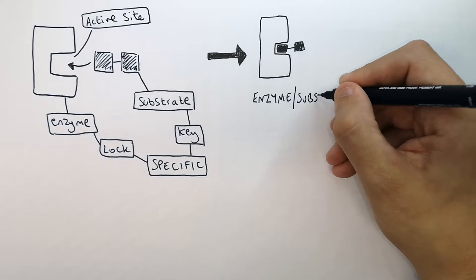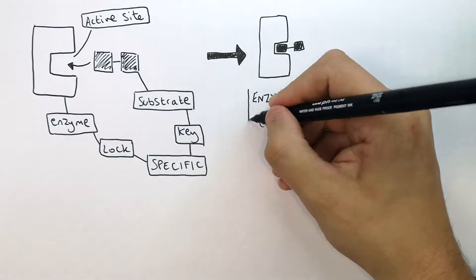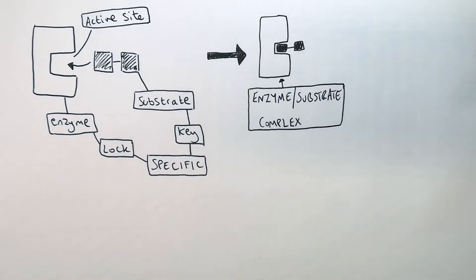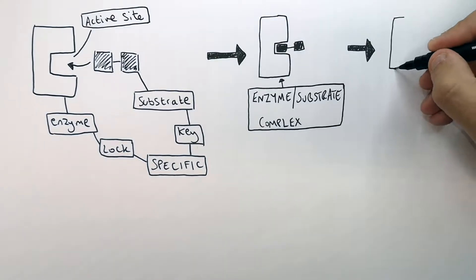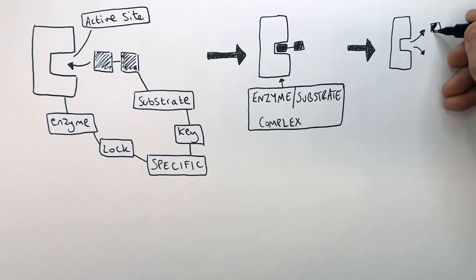The enzyme-substrate complex is when the substrate has bound the active site of the enzyme. And that means that the enzyme can break down the substrate into products.